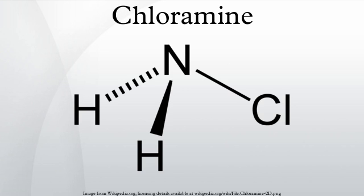At pH values above 11, the following reaction slowly occurs: 3NH2Cl + 3OH⁻ → NH3 + N2 + 3Cl⁻ + 3H2O. In an acidic medium at pH values of around 4, chloramine disproportionates to form dichloramine, which in turn disproportionates at pH values below 3 to form nitrogen trichloride: 2NH2Cl + H⁺ → NHCl2 + NH4⁺; 3NHCl2 + H⁺ → 2NCl3 + NH4⁺.